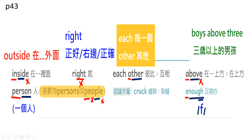Right有很多意思：刚刚好、正好、恰好，或者是右边，Right hand（右手）；或者You are right（你说的对）。Right是一字多意，一个字有很多意思，请你把它补上。